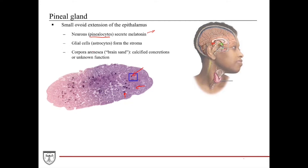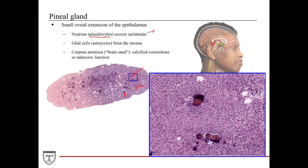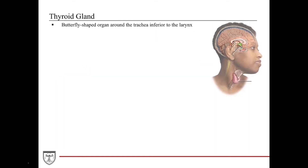At a higher magnification of the boxed area, we can appreciate the cellular nature and the tissue composition reminiscent of neural tissue. Many of these larger neurons belong to the pinealocytes — the ones actually producing melatonin — and the smaller, more oval nuclei belong to the astrocytes or glial cells in the pineal gland. The brown to black, irregularly shaped and sized structures are the corpora arenacea.